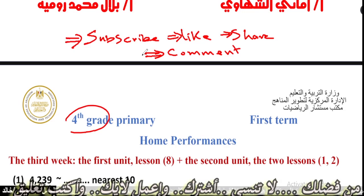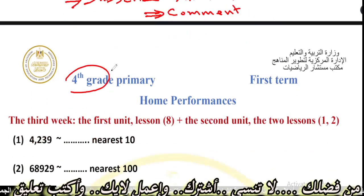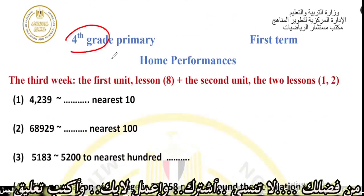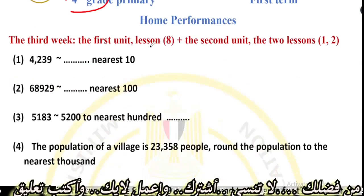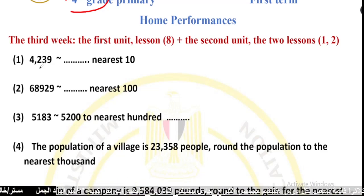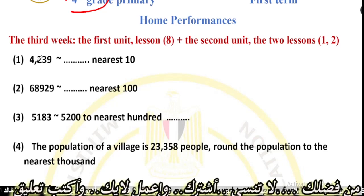At the end of this video, we will study home performance and answer the questions for the third week. Number one: round 4,239 to the nearest tenth.